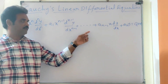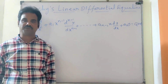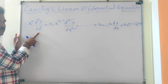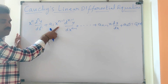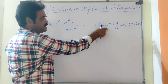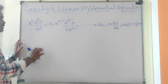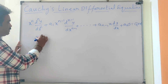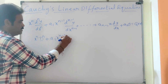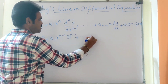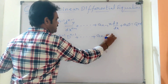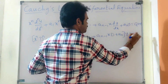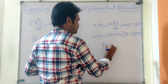Where a1, a2, ... a_n are real constants and Q(x) is a function of x. This is Cauchy's Linear Differential Equation. In operator form, this becomes: x^n D^n + a1 x^(n-1) D^(n-1) + ... + a_(n-1) xD + a_n, all into y equals Q(x), where capital D is d/dx.